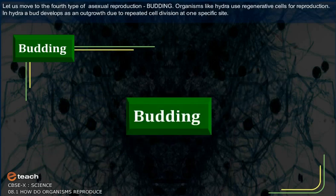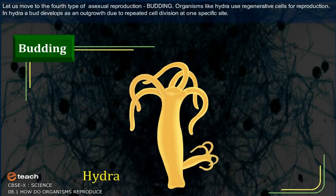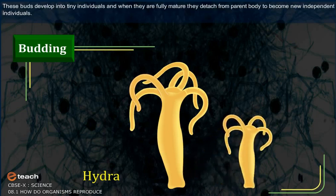The fourth type of asexual reproduction is budding. Organisms like Hydra use regenerative cells for reproduction. In Hydra, a bud develops as an outgrowth due to repeated cell division at one specific site. These buds develop into tiny individuals and, when fully mature, detach from the parent body to become new independent individuals.